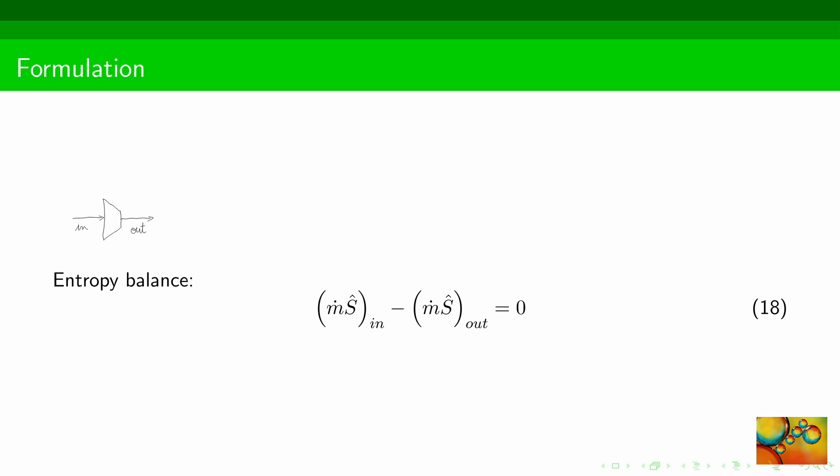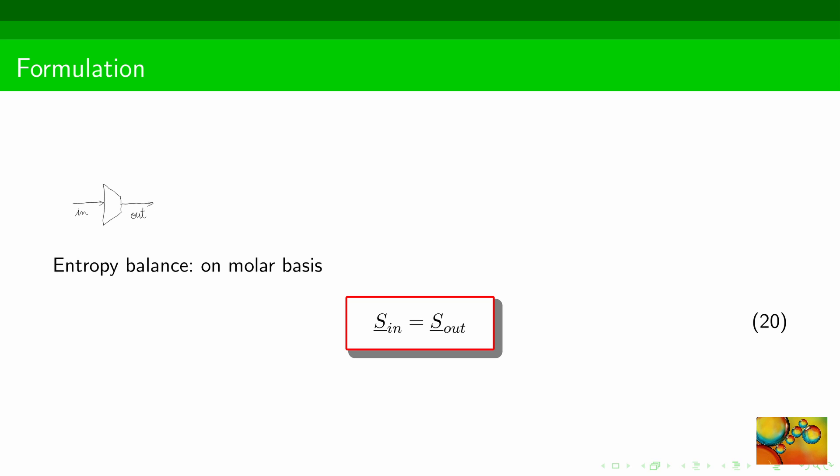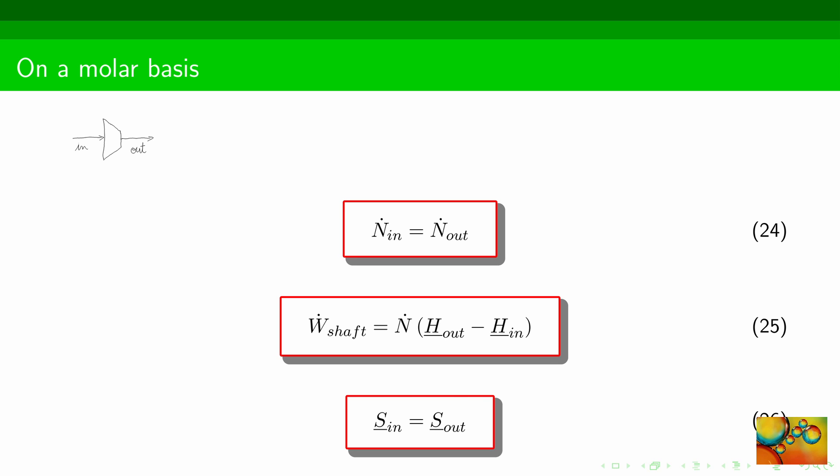Crossing out all these terms, and remembering that we only have one input and one output stream, we find that the operation is isentropic. Here is the equivalent result written on a molar basis. Here are simplified forms of the mass, energy, and entropy balances ready for use if you are going to apply a pressure-entropy diagram. And here are the simplified forms on a molar basis, suitable for applications with equations of state that will give you the molar properties.